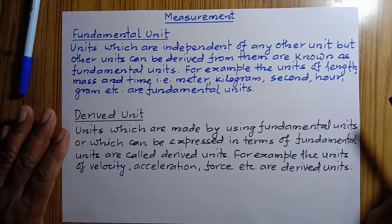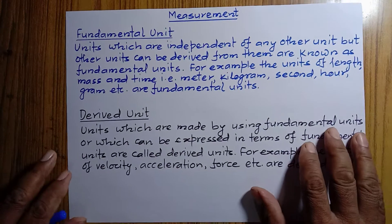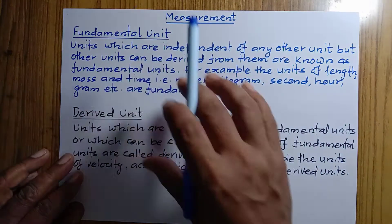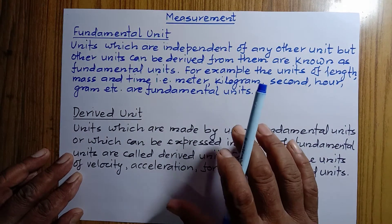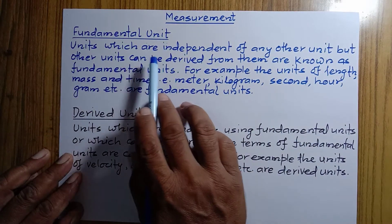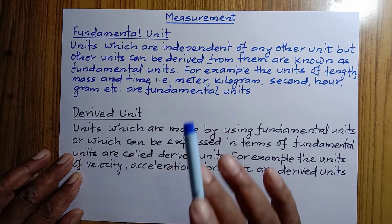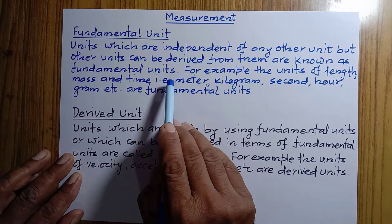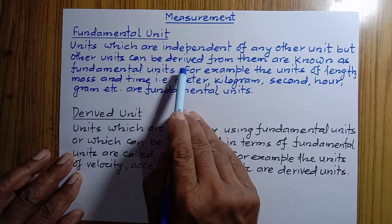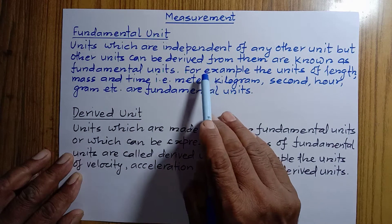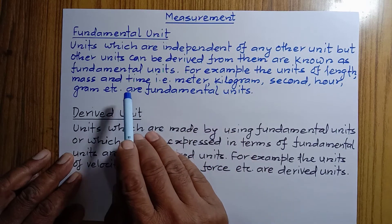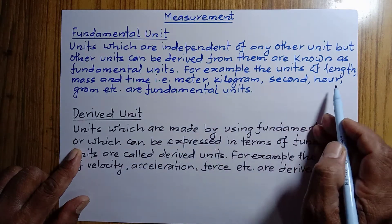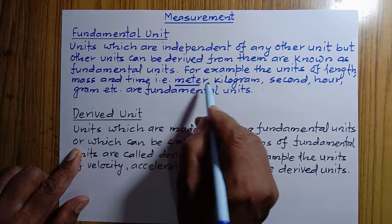We are continuing with fundamental units and derived units. Units which are independent of any other unit, but from which all other units can be derived, are known as fundamental units. For example, the units of length, mass, and time — that is, meter, kilogram, second, hour, gram, etc. — are fundamental units.